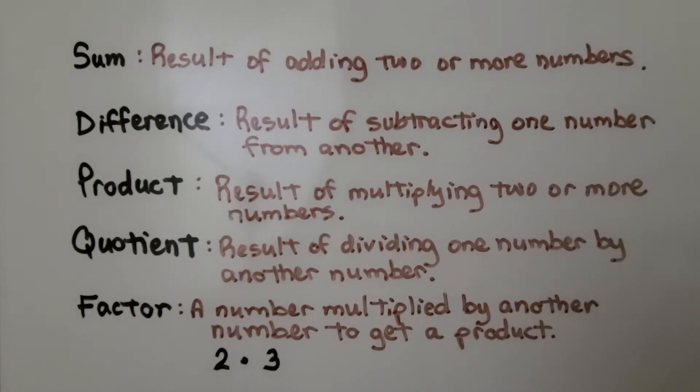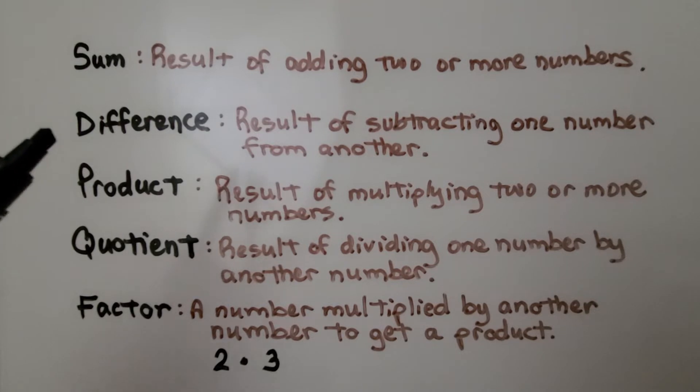For a real quick review, the sum is the result of adding two or more numbers. A difference is the result of subtracting one number from another. It's the answer in subtraction.